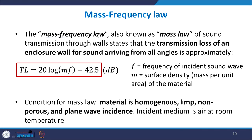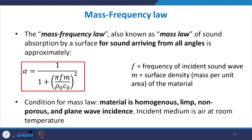Based on these derivations of absorption coefficient and transmission loss, the mass frequency law can be stated as follows: the transmission loss for walls acting as barriers or enclosures for sound arriving from all angles is approximately given by TL = 20·log(m·f) − 42.5 dB. The conditions are that the material is homogeneous, limp, non-porous, and plane wave incidence is assumed.